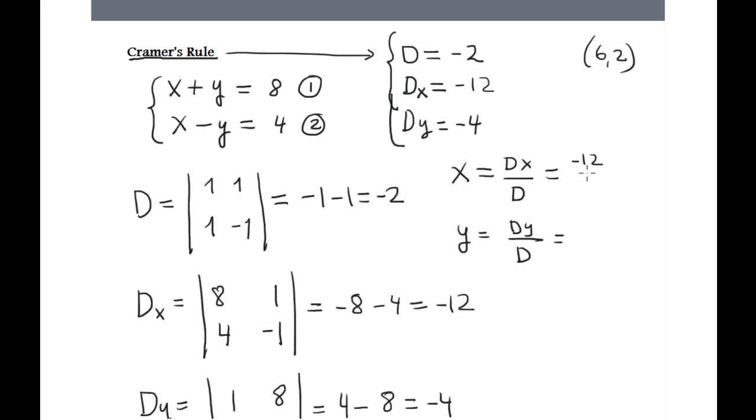Dx is minus 12 divided by D which is minus 2. Negative 12 divided by negative 2 is 6, exactly like that. And Dy, negative 4 divided by negative 2 is positive 2, exactly like that.